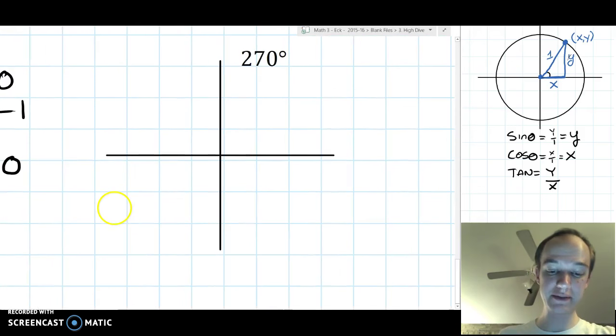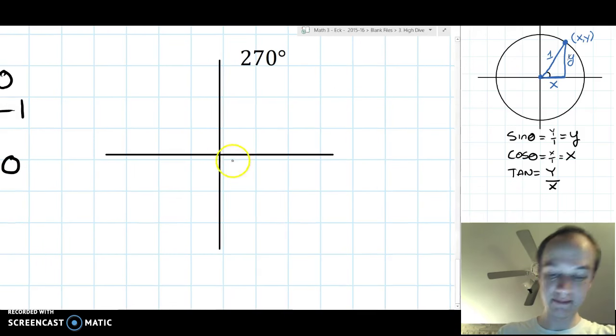270 degrees. At 270 degrees, the angle starts here, and rotates all the way around, past 90, past 180, all the way to this negative y axis.